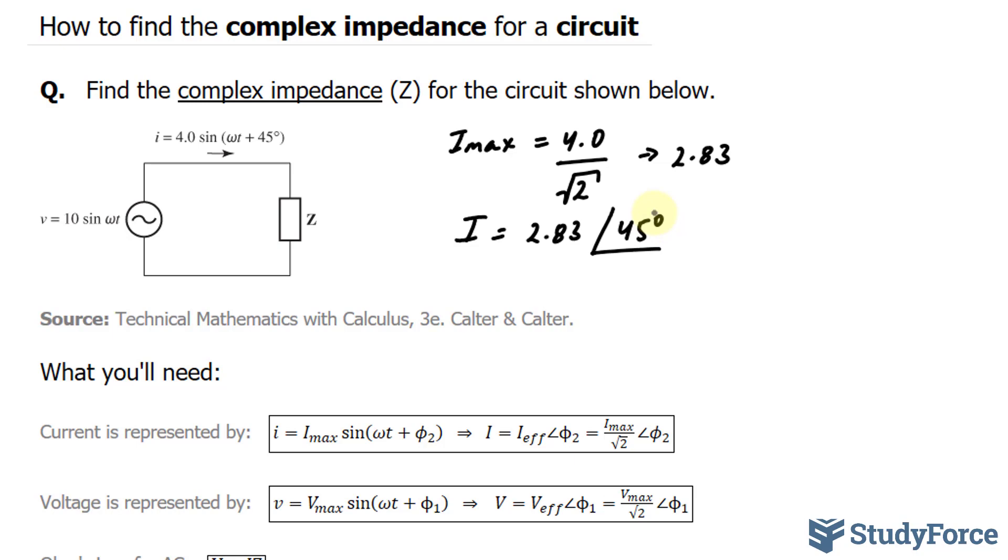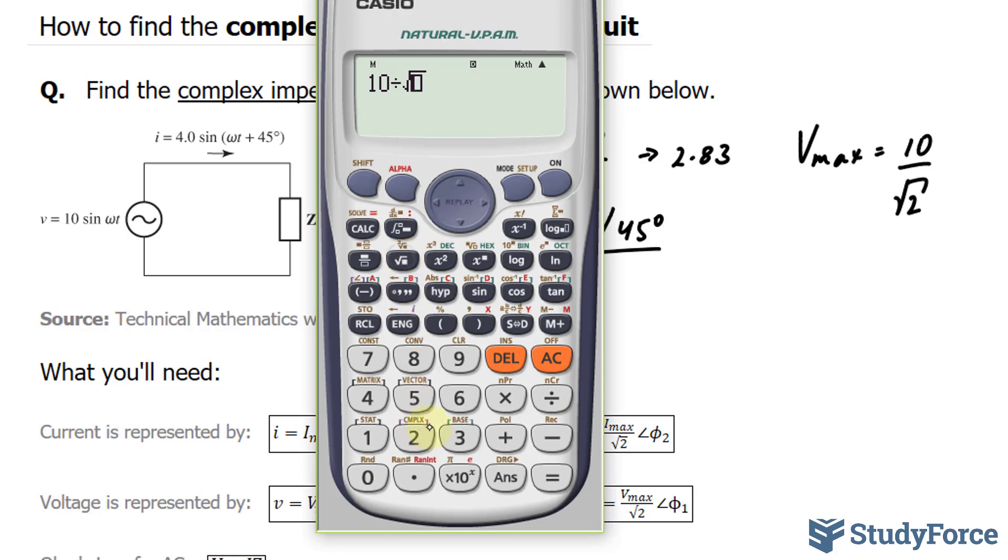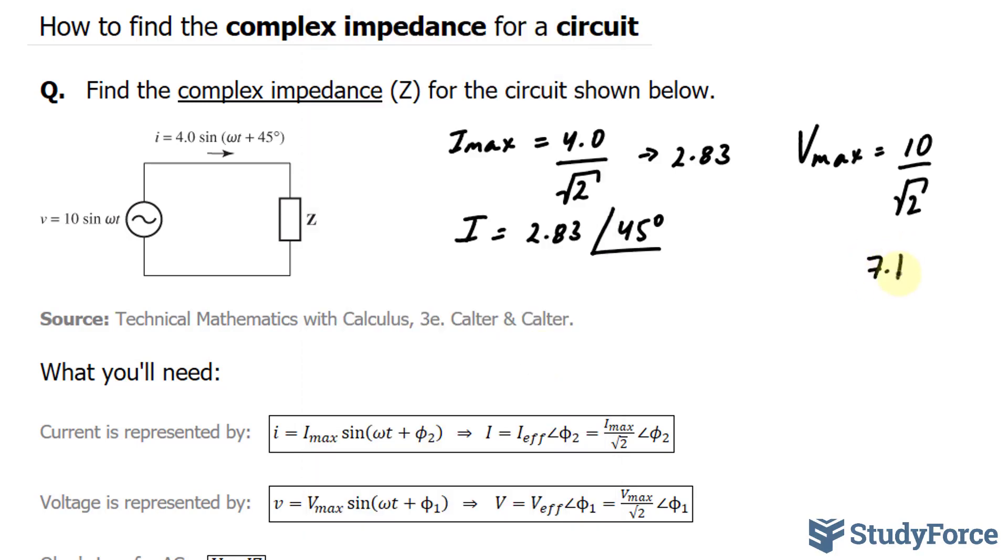I have to do the same thing now for my voltage. This number 10 represents Vmax. I can find the effective voltage by taking my amplitude and dividing it by the square root of 2. 10 divided by the square root of 2 gives me approximately 7.1. This represents my effective voltage. The phase angle here is 0, so I'll write down V = 7.1 ∠0°.